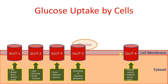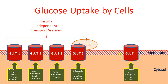There are other transporters too — for example, GLUT7 and sodium-dependent glucose transporters — but they are not covered here. Among the transporters listed, GLUT1, 2, 3, and 5 are insulin-independent transport systems, meaning they do not require insulin to transport glucose into the cell.